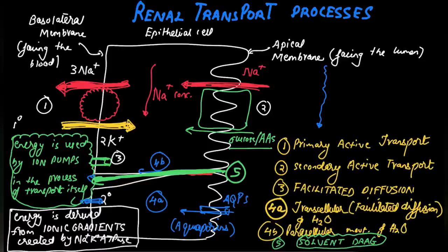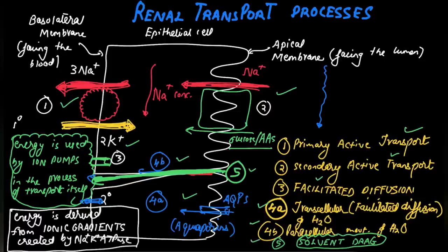So to sum up: there is primary active transport, which transports three sodium ions out of the cell and two potassium ions into the cell. There is secondary active transport of sodium with glucose and amino acids — secondary because it is secondary to ionic gradients created by the sodium-potassium ATPase pump. And mainly, facilitated diffusion through channels. Thank you so much.